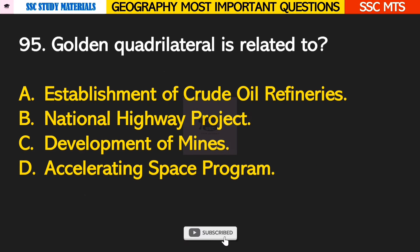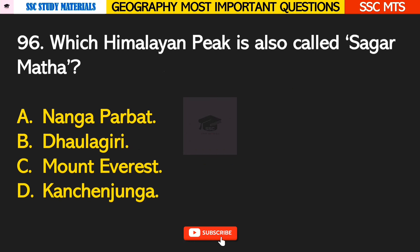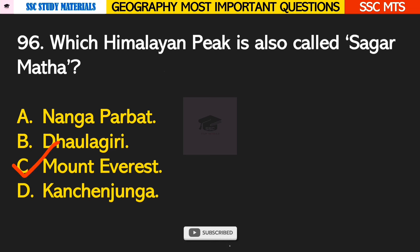Question number 95: Golden Quadrilateral is related to? Answer B — it is related to the national highway project. Question number 96: which Himalayan peak is also called Sagarmatha? Answer C — Mount Everest.